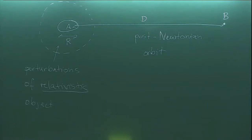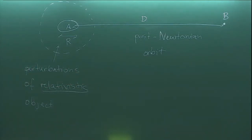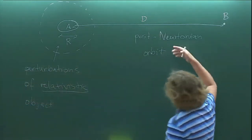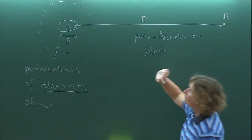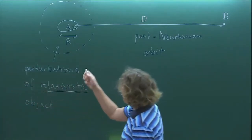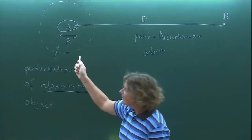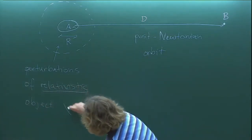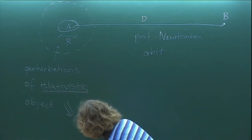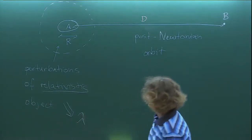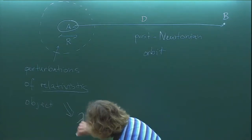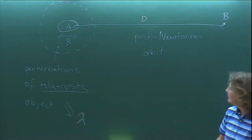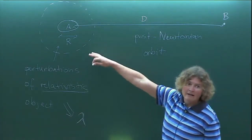So the point is that to compute the orbital motion, all we need are these multipole moments. The information that comes from the strong-field region is just these parameters lambda in this approximation. This will give us lambda, and you will see this afternoon for a Newtonian star how lambda comes out from doing Newtonian perturbation theory near the body.